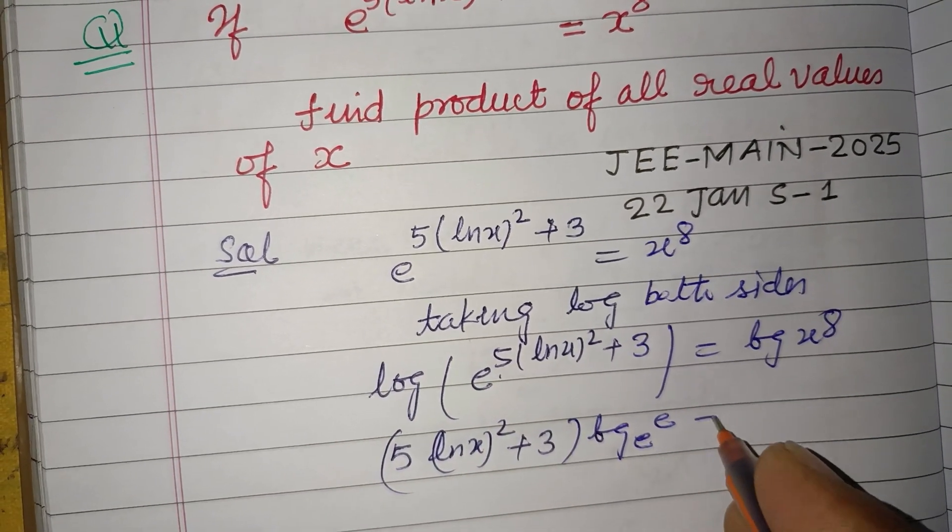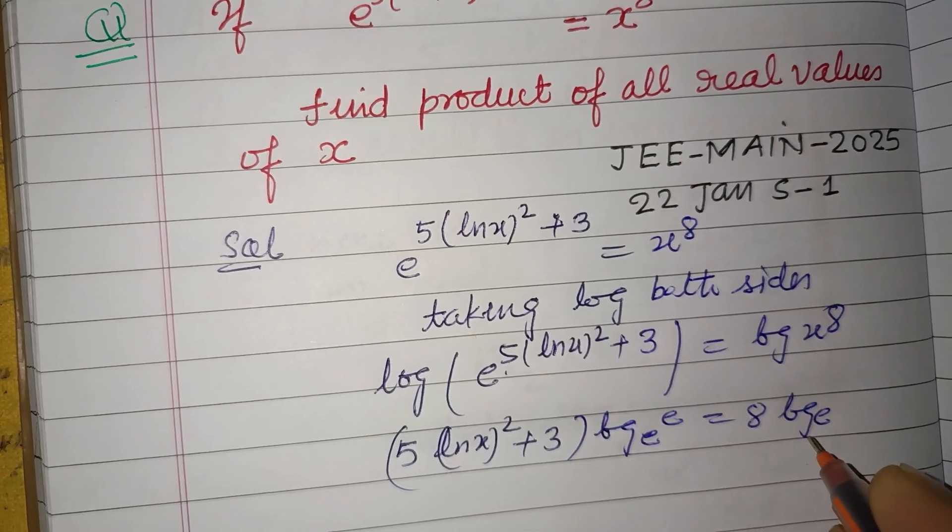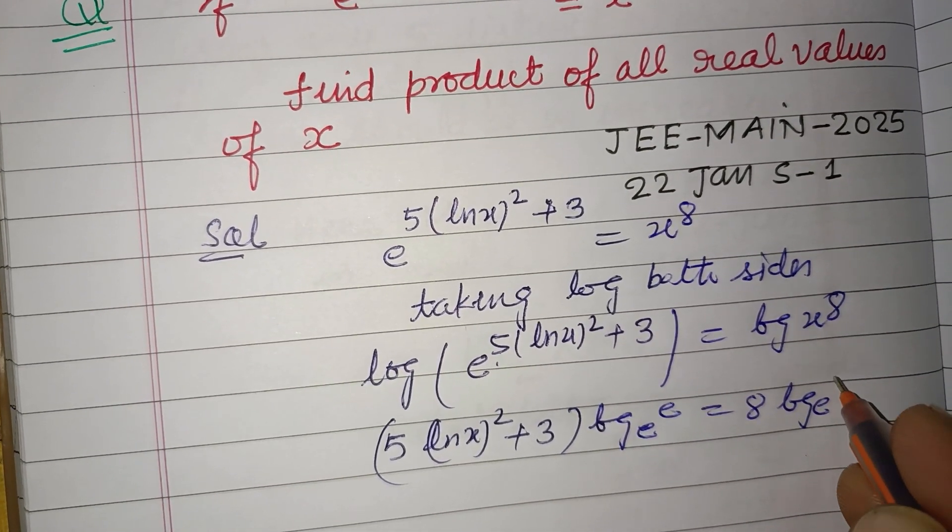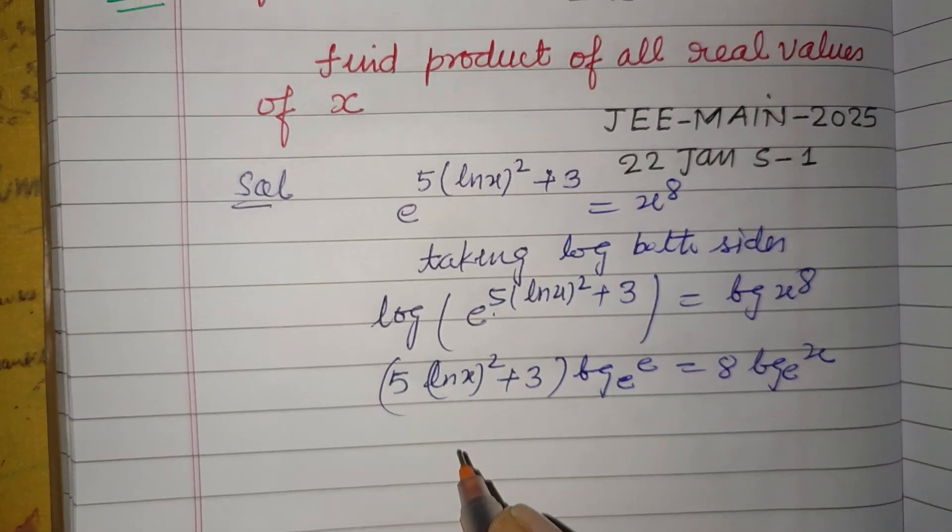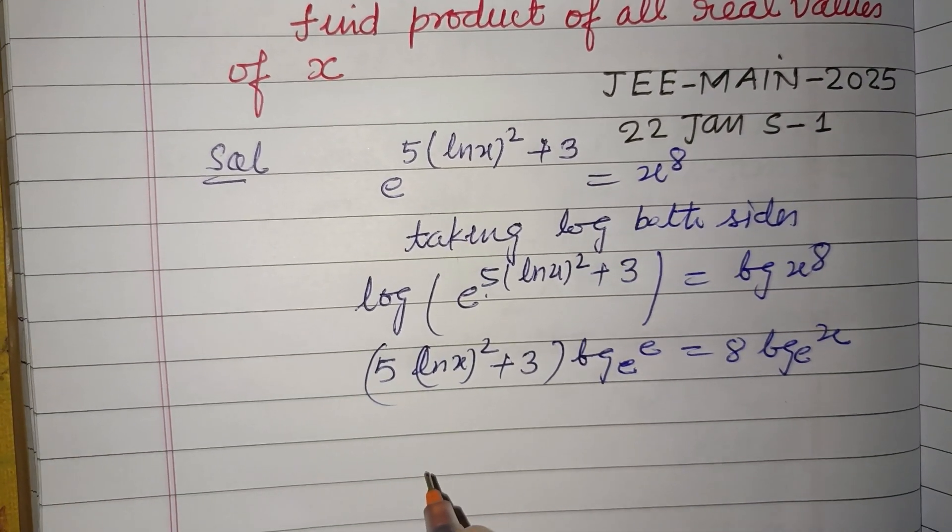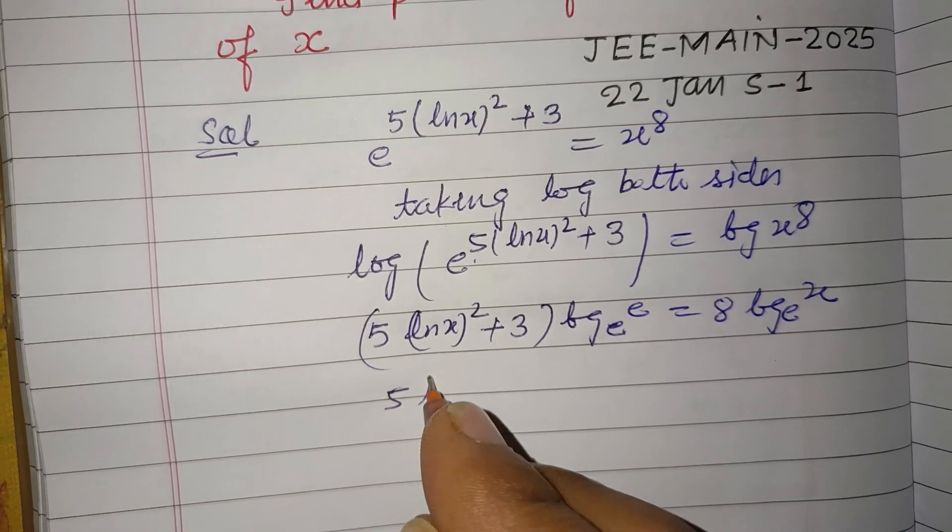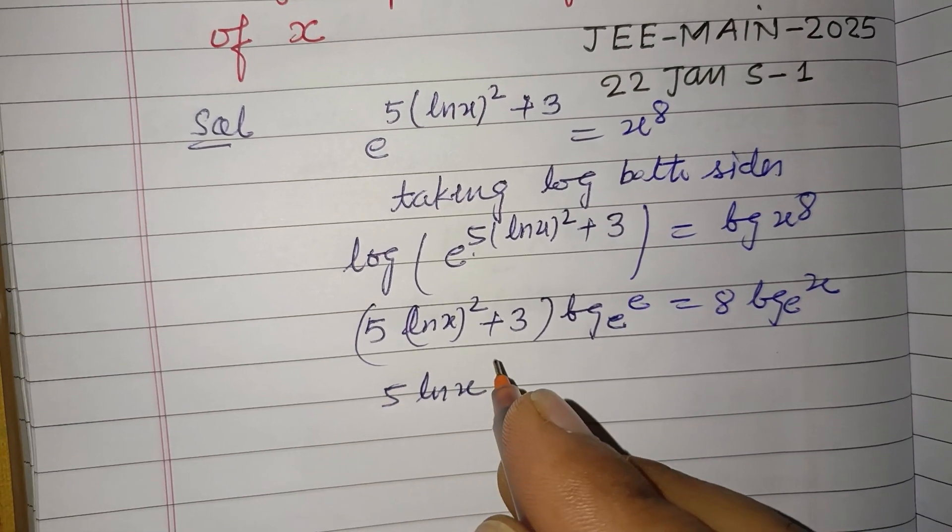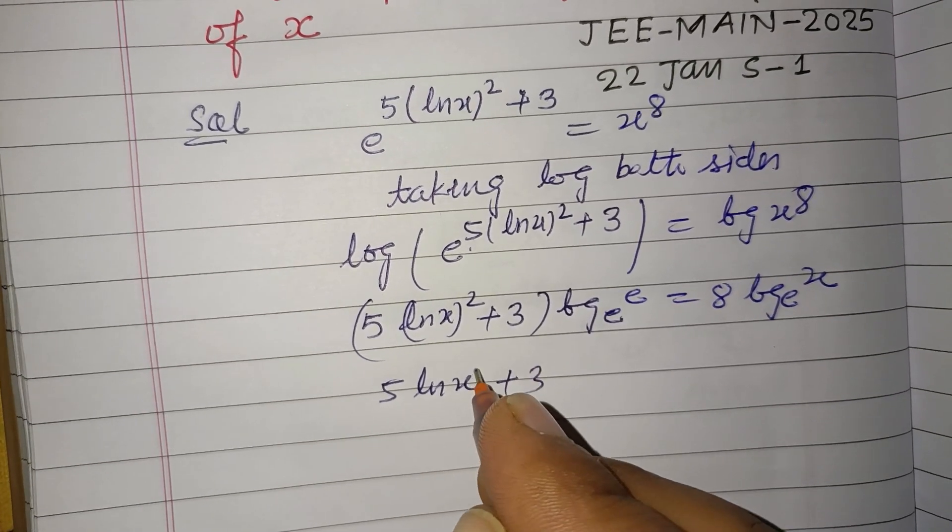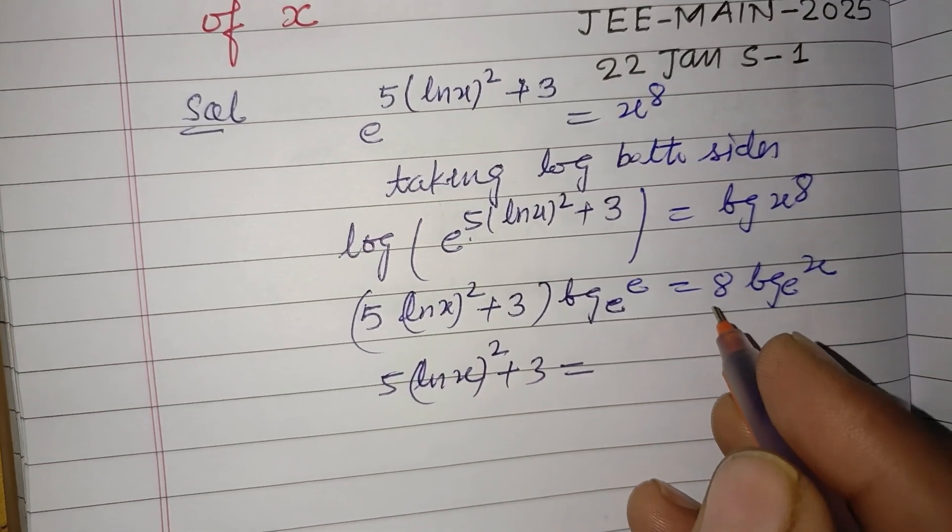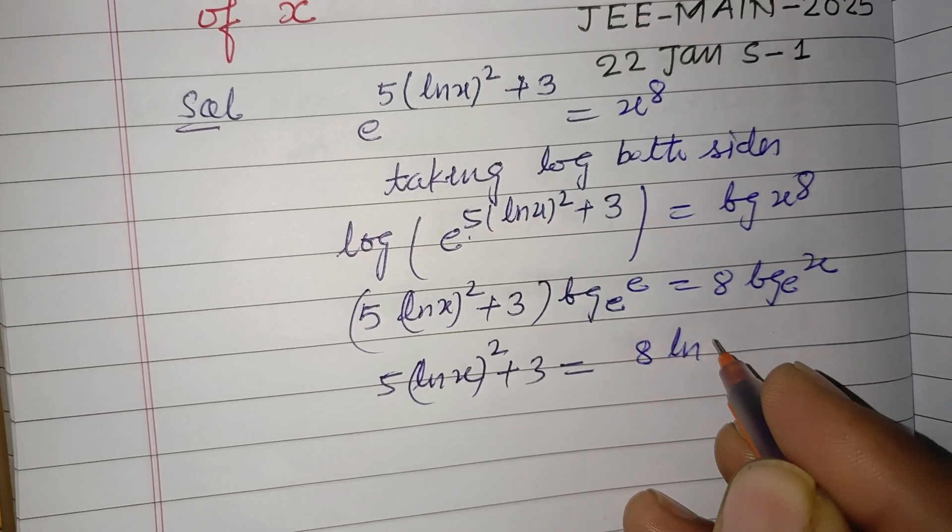This is 8 ln x, so this is 1. So 5 times ln x squared plus 3 equals 8 ln x.